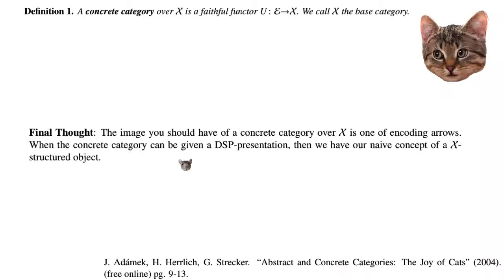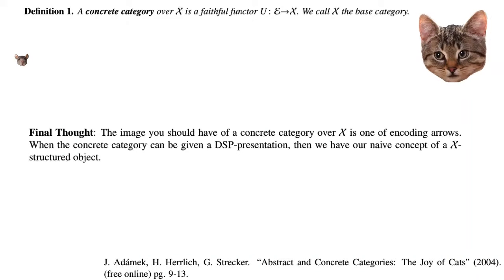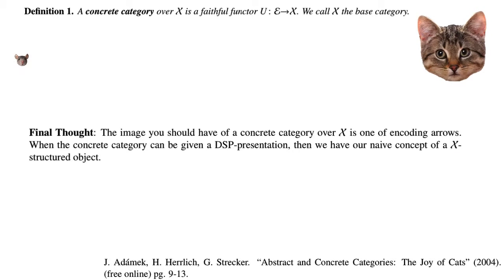As a final thought, the image you should have of a concrete category over X is one of encoding arrows. When the concrete category can be given by a data-structure-properties presentation, we regain our naive concept of an X-structured object.